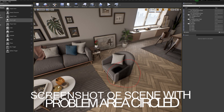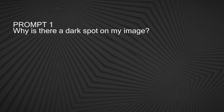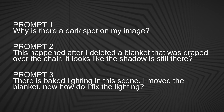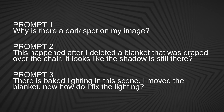Now we know what the problem is that we're going to debug. Let's go over the rules of the test. First, I will upload a screenshot showing the image, and I'm going to circle the problem area in red. Part of the test will be to see if the AI recognizes the circled area. Then I have three questions. Number one: simply, why is there a dark spot on my image? Stage two: I'll give it more information — this happened after I deleted a blanket that was draped over the chair; it looks like the shadow is still there. Questions one and two assume I don't know how to fix this and don't even know what the problem is. For question three, I'll assume I figured out the problem but still don't have the solution: there is baked lighting in the scene, I moved the blanket — now how do I fix the lighting?